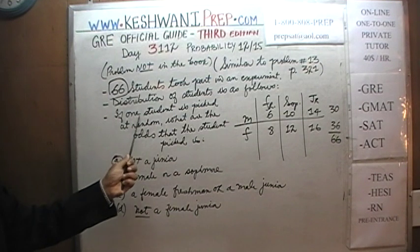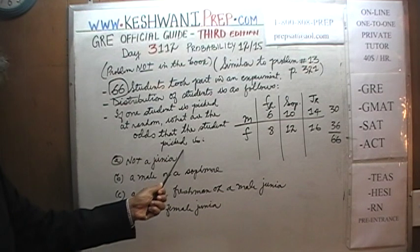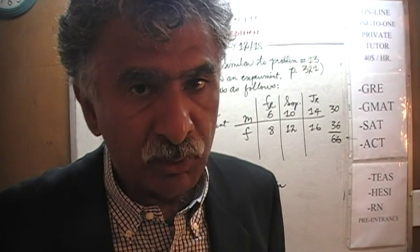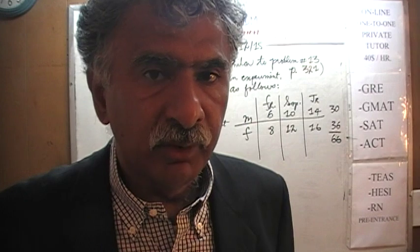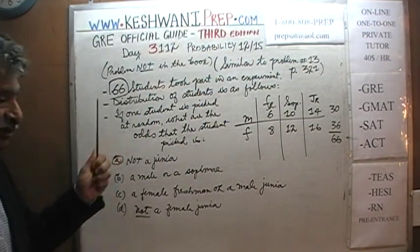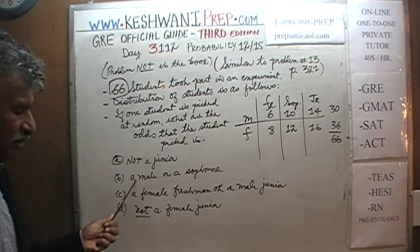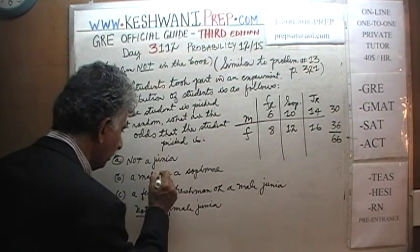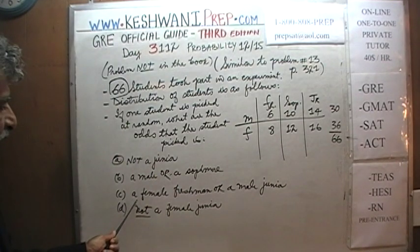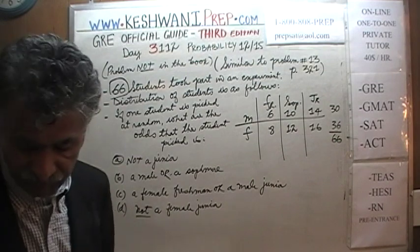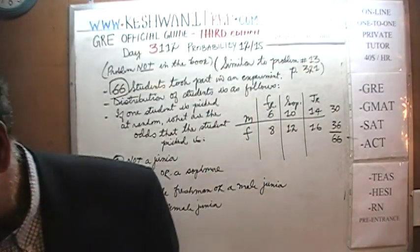The question is: if one student is picked at random from these 66, what are the odds? There are four parts to this problem. I'd like you to do all four parts yourself first. I'll give you five seconds to pause the video, work through all four parts, and then resume to compare your work with mine. Here are the four parts: (A) not a junior; (B) male or a sophomore; (C) a female freshman or a male junior; (D) not a female junior.